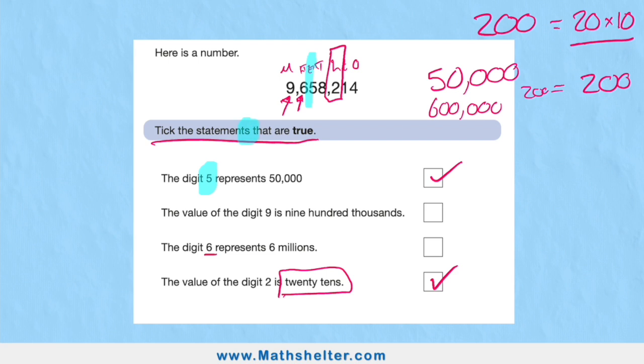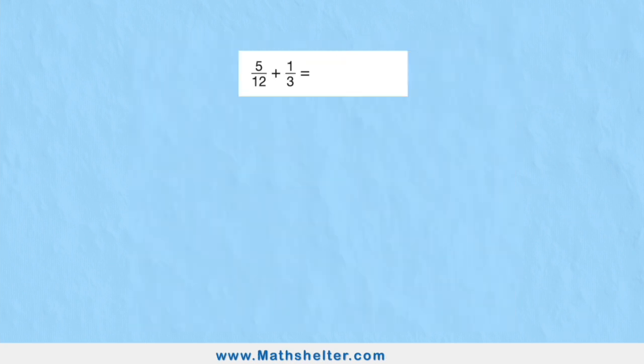Tricks here: realize that it says statements, which means we know we need more than one. And read things very carefully, like this last little tricky one tried to confuse us. But just read it and understand that there are always little things we can do to help us. Twenty tens is two hundred, and the two was in the hundreds column, so it's valued at two hundred—therefore it's the same.